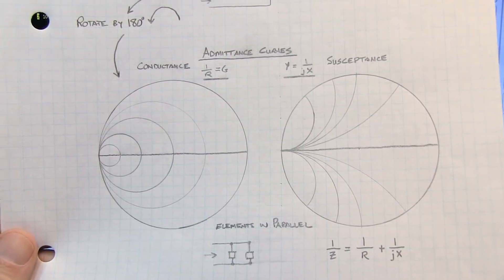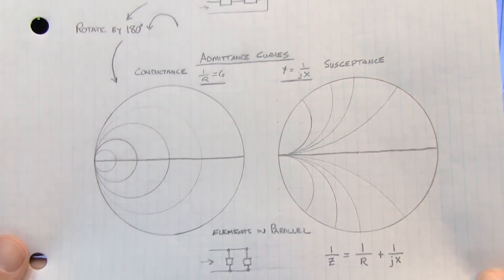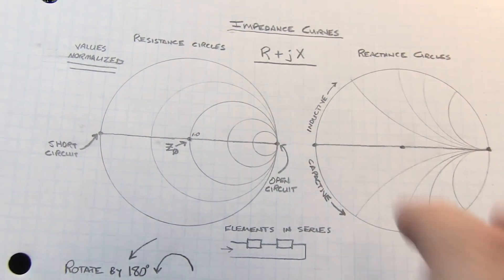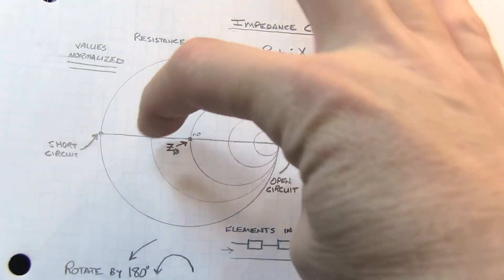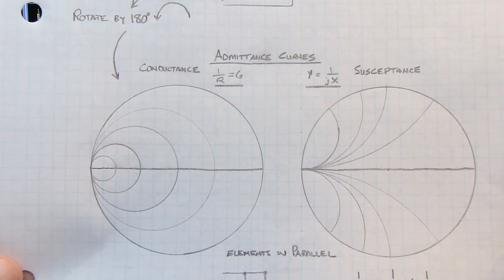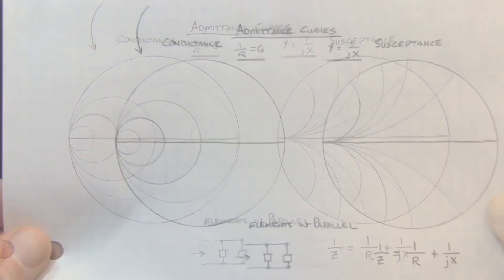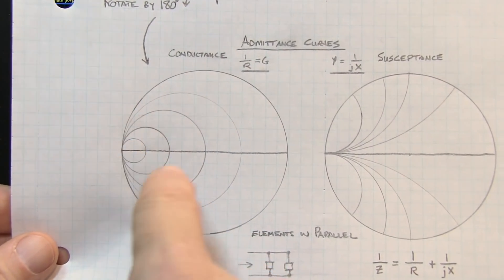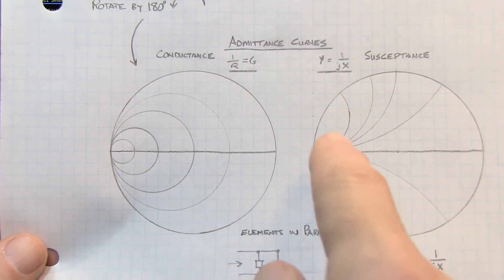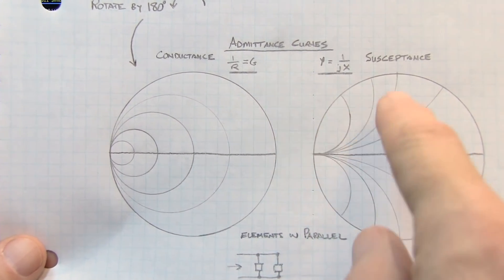Now these admittance curves are really the same exact curves that we looked at for the impedance curves, except rotated 180 degrees. You take this chart and you spin it around 180 degrees, you have these charts back here, and that's how they're derived. So these circles now represent constant conductance values, and these arcs represent constant susceptance values.